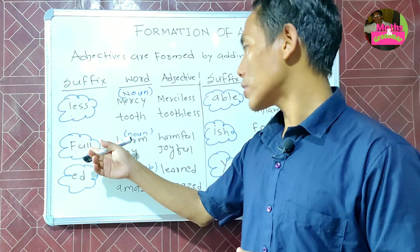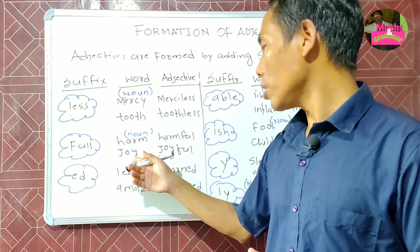Next is the suffix '-full.' 'Harm' is a noun — harm becomes 'harmful.' So too, 'joy' becomes 'joyful.'